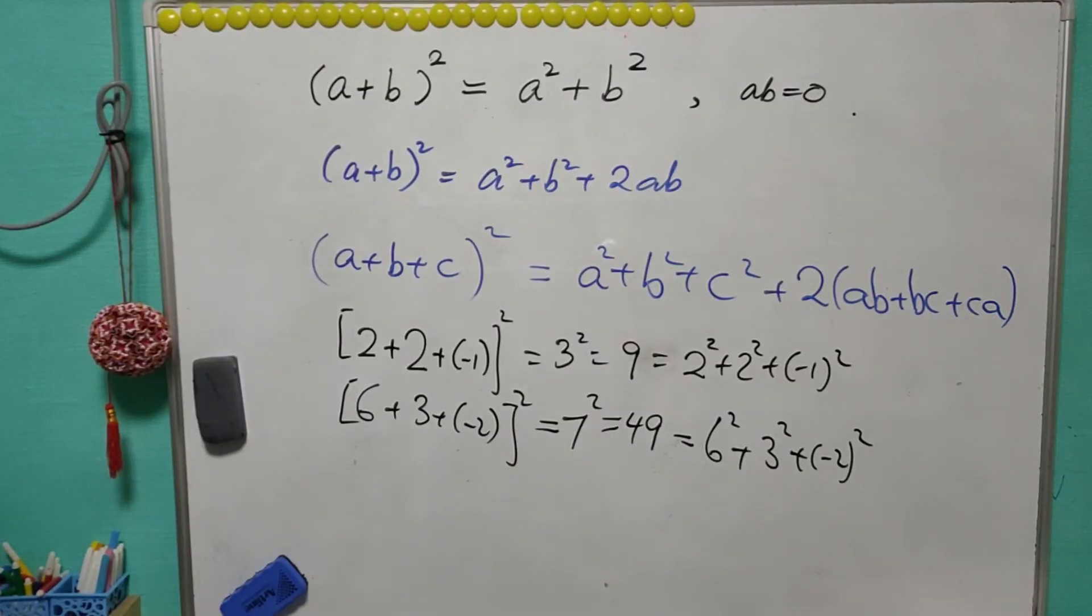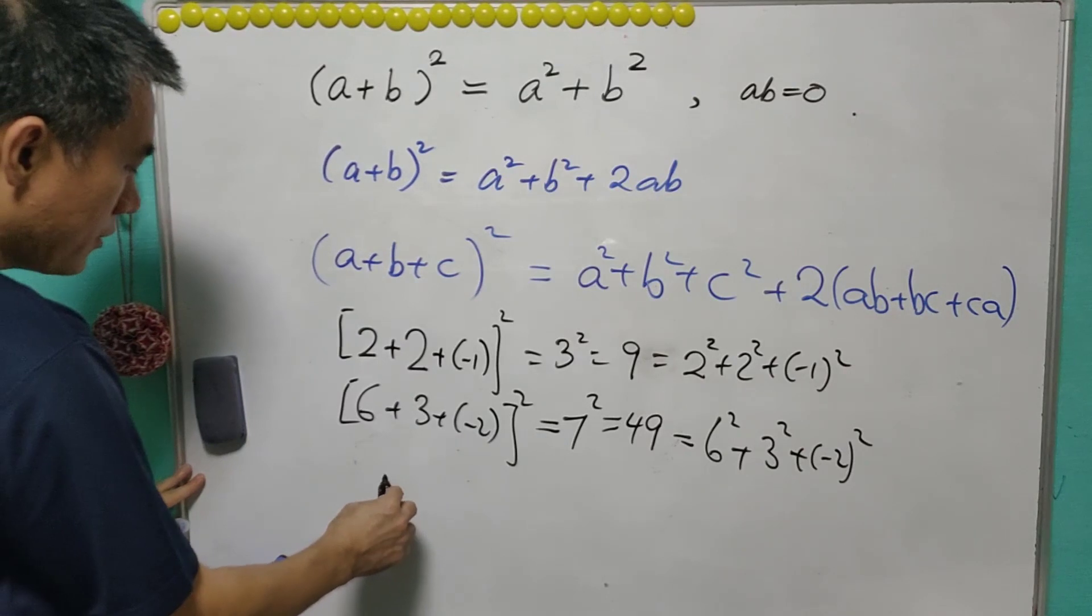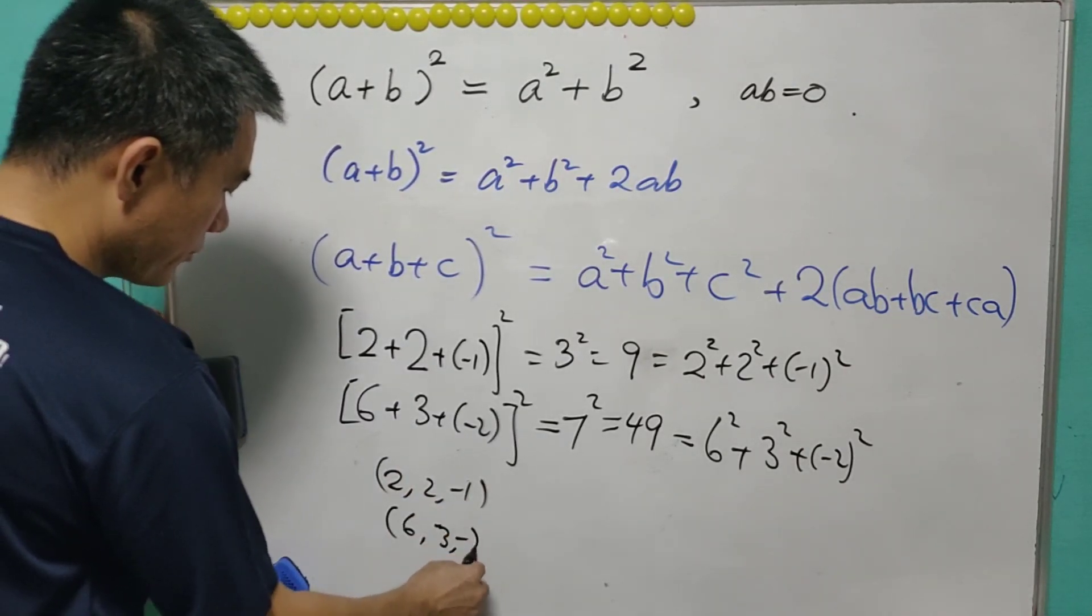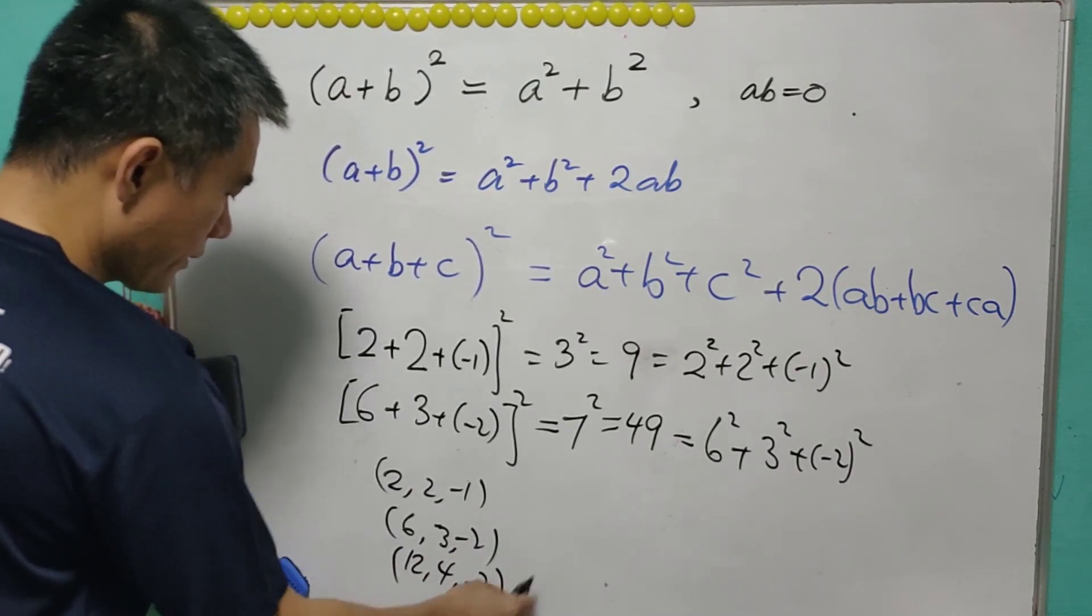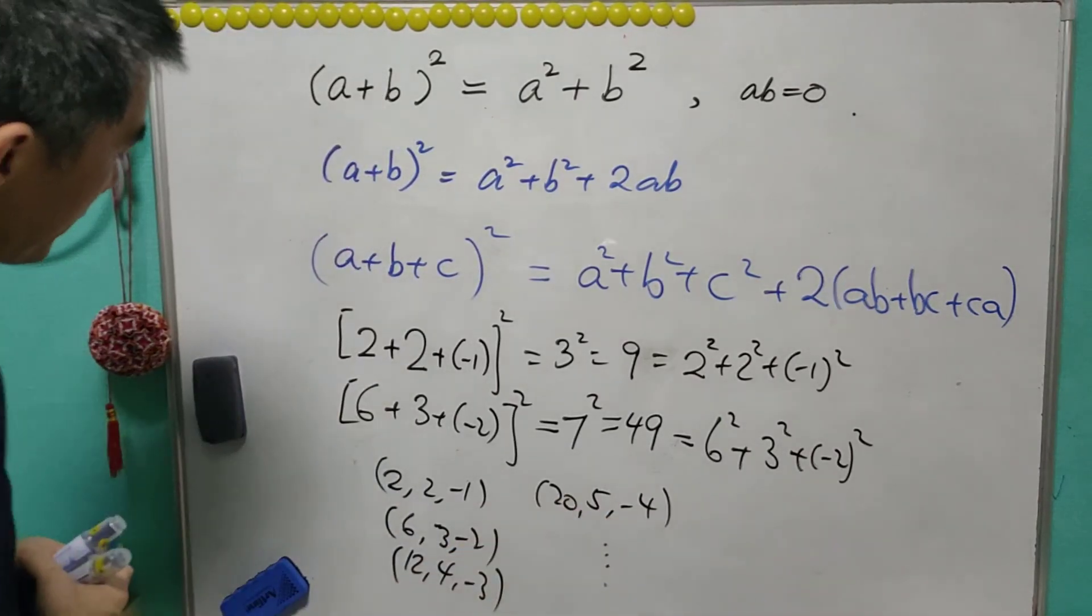So we will just focus on a, b, and c, then we can find out the following pattern: 2, 2, negative 1; 6, 3, negative 2; 12, 4, negative 3; 20, 5, negative 4. So I will be able to find a pattern.